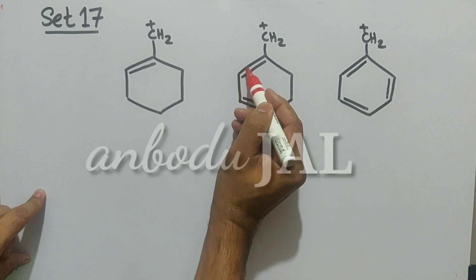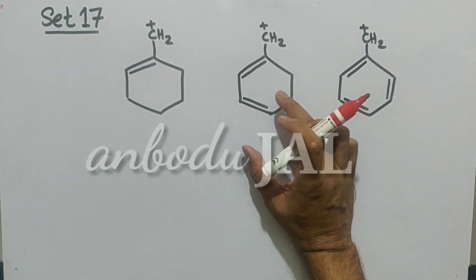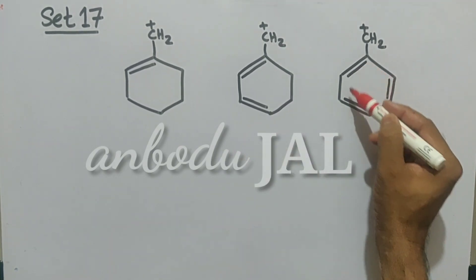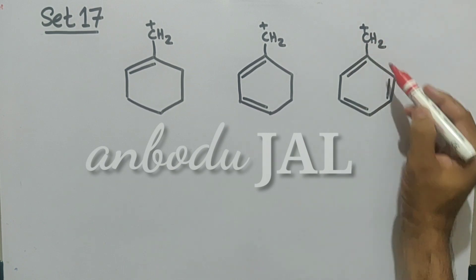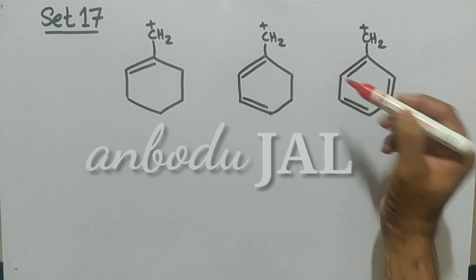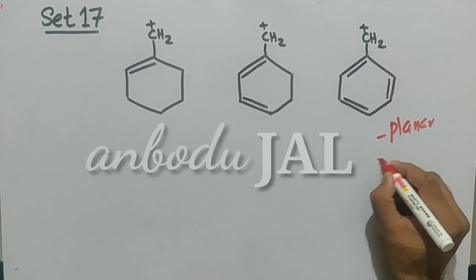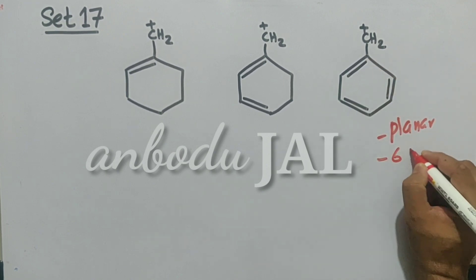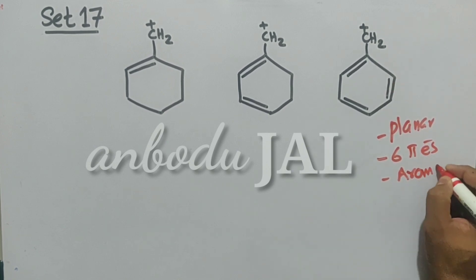In the third structure, complete conjugation is there. Due to complete conjugation, all carbon atoms are sp2, so this structure is planar. Also, the pi electrons are 2 + 2 + 2, that is 6 pi electrons. That is why this species is aromatic.